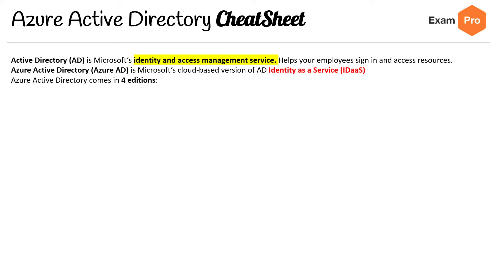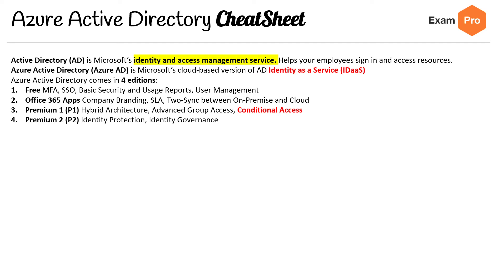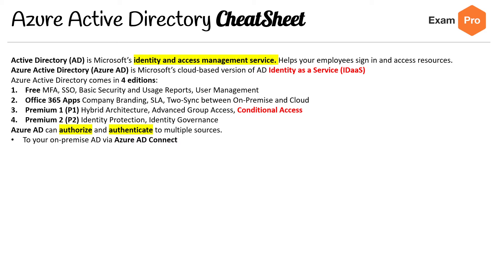Azure Active Directory comes in four editions: you've got the Free one, Office 365 Apps, Premium 1 (also known as P1), and Premium 2 (P2). It's good to know the differences between what features you have in each. I highlighted Conditional Access because that's an important one on the exam to know.